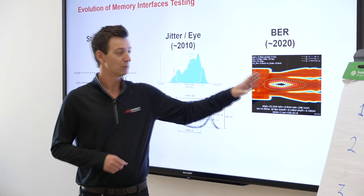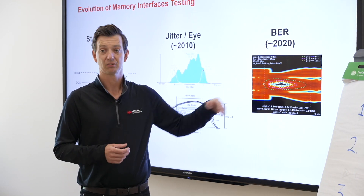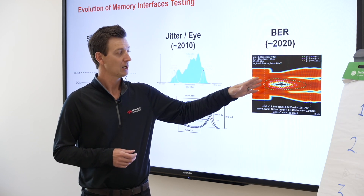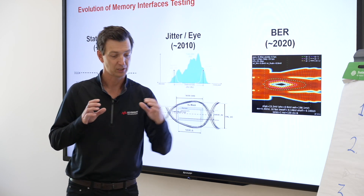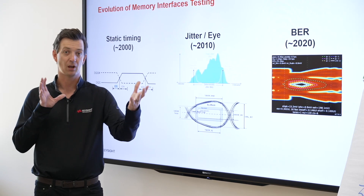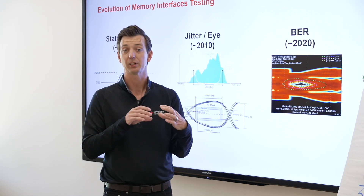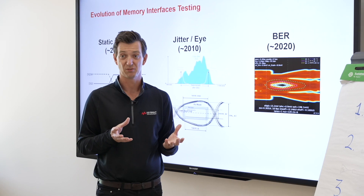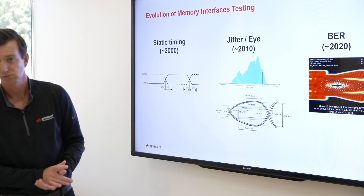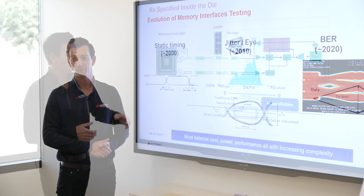Now we run at such fast data rates — six gigabits per second, eight gigabits per second — that there's so much loss in the signal line, the eye decreases completely. So they went and introduced equalization. Can you talk more about that? Can you go into more depth on that?